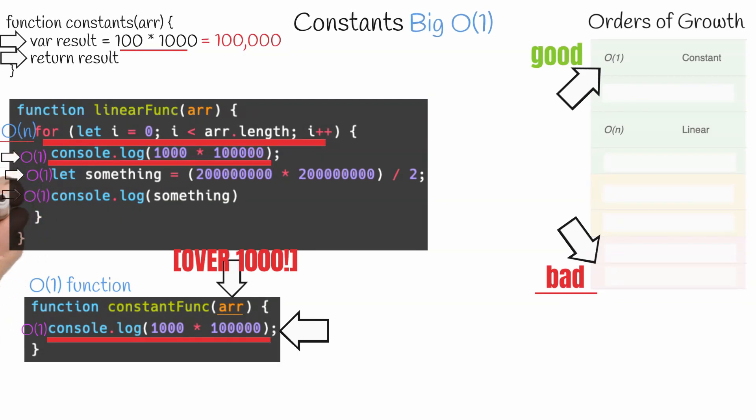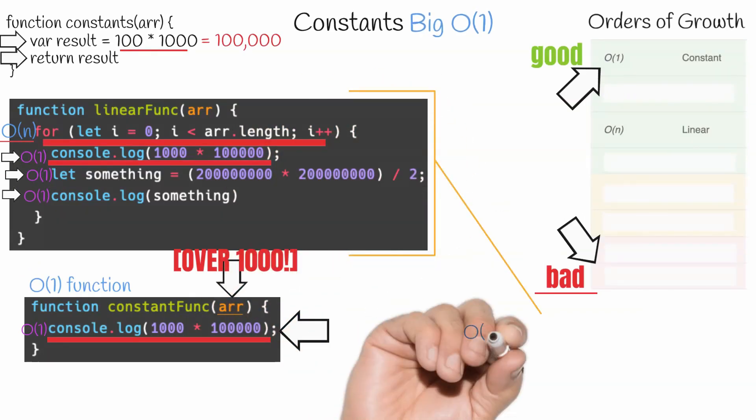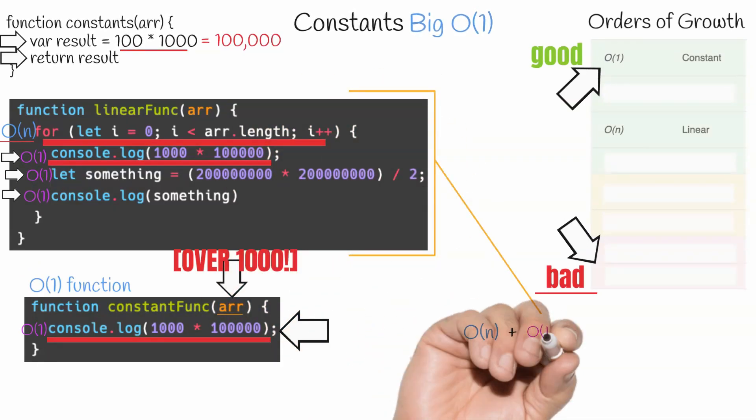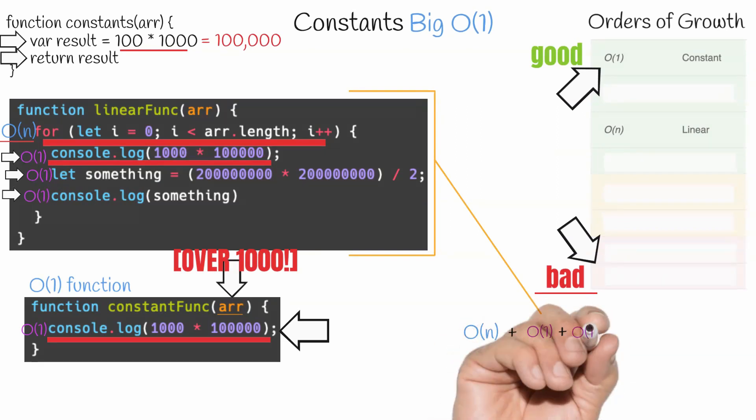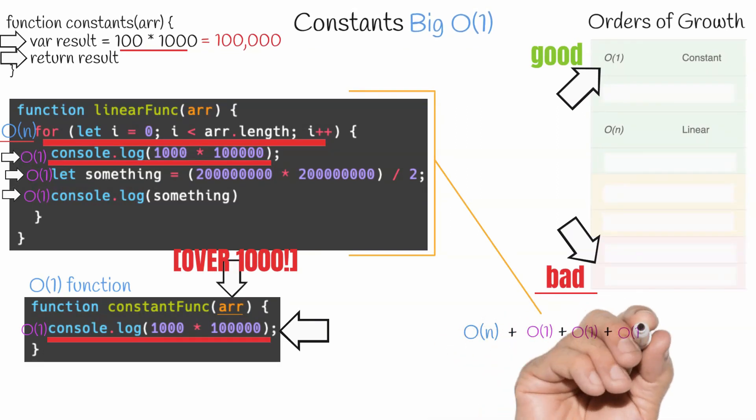So if we add the performance of all of these lines up like so, all of the lines of code that are O of one get canceled out because O of n is the worst performing or highest order part of the function.